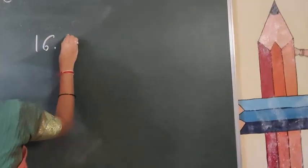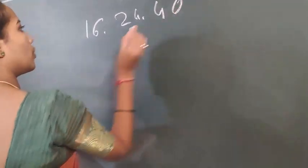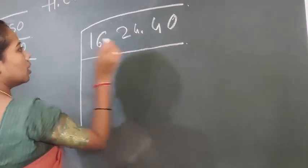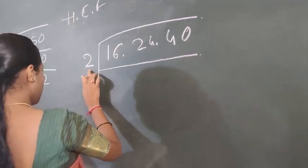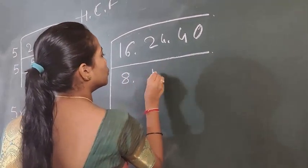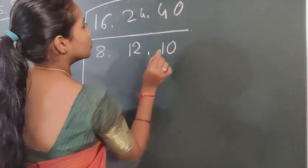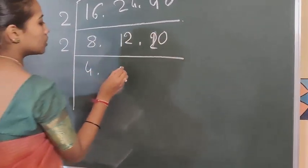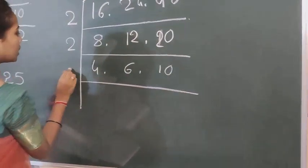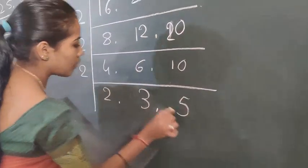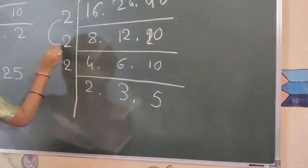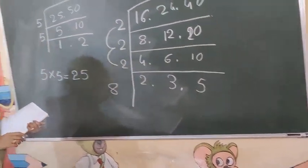Next, 16, 24, and 40. These are multiplied with 2. First 2: 2 times 8 is 16, 2 times 12 is 24, 2 times 20 is 40. Next 2: 2 times 4 is 8, 2 times 6 is 12, 2 times 10 is 20. Next 2: 2 times 2 is 4, 2 times 3 is 6, 2 times 5 is 10. Remaining is 2, 3, 5. So 2 times 2 is 4, 4 times 2 is 8. Eight is the HCF. Understood? This is the highest common factor.